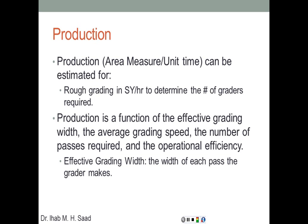For rough grading, production is measured in square yards per hour. Production is a function of the effective grading width — the width of the blade perpendicular to the direction of motion — the average grading speed, the number of passes required, and the operational efficiency in productive minutes per hour (e.g., 45 or 50 minutes per hour). The effective grading width is the full blade width if perpendicular to the direction of motion, or less if the blade is tilted.